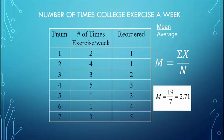The mean is the measure we use most commonly because it really gives us the most information about our data. When you calculate the mean, you're adding in every single score — every person's score counts. So we think of the mean as a very robust measure of Central Tendency in that everybody's score is counted.